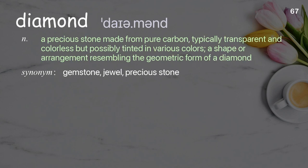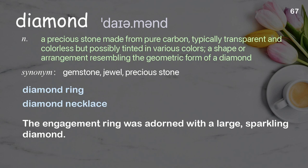Diamond: a precious stone made from pure carbon, typically transparent and colorless but possibly tinted in various colors; a shape or arrangement resembling the geometric form of a diamond. Examples: diamond ring, diamond necklace. The engagement ring was adorned with a large sparkling diamond.